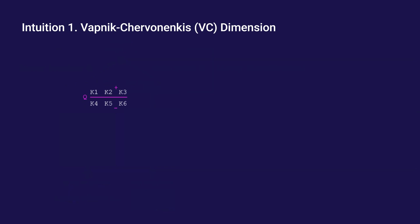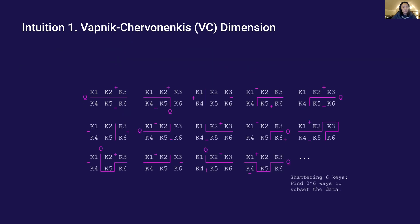Suppose we have six keys. One query may match with three of them as positive keys. But there are actually two to the power six number of ways to assign some keys as positive and others as negative. As long as our hypothesis class can throw all two to the power six number of queries at the keys, this is the idea of shattering.